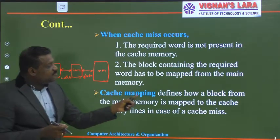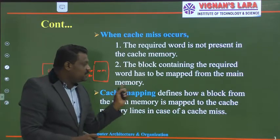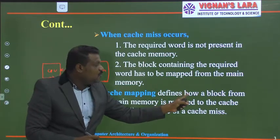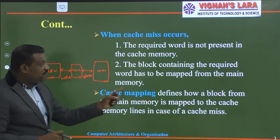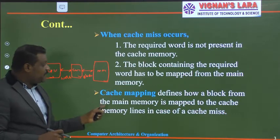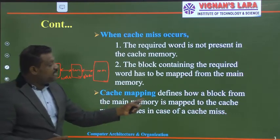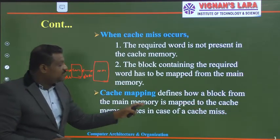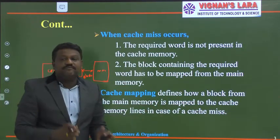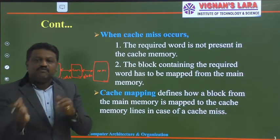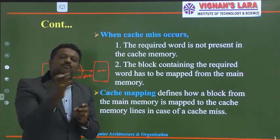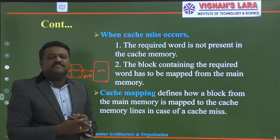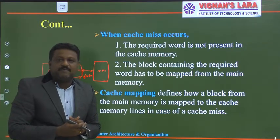Cache mapping defines how a block from the main memory is mapped to the cache memory lines in case of a cache miss — how a main memory block is mapped onto cache memory lines. That indicates cache mapping.